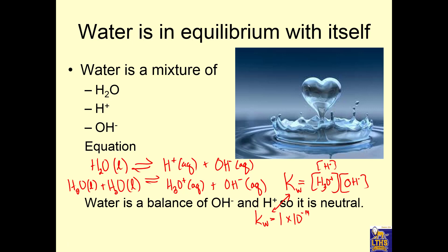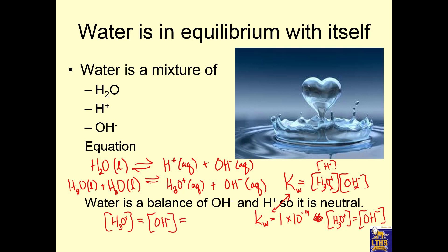Every time you get one hydronium ion, you get one hydroxide ion — they're equal to each other. So we can solve: hydronium ion equals hydroxide ion, so that's X times X equals 1 times 10 to the negative 14. The hydronium ion concentration equals the hydroxide ion concentration, which equals 1 times 10 to the negative 7. In pure water, there are equal amounts of hydronium ion and hydroxide ion, and they're very small — 1 times 10 to the negative 7.